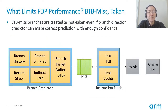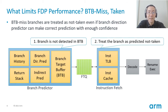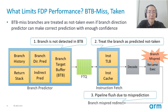The other issue is BTB-miss taken branches. As mentioned, FDP relies on BTB to identify branch location. If a given branch misses BTB, the branch predictor cannot identify branch location nor branch target. Typically, such a branch is treated as not-taken regardless of branch direction predictor output. If the branch is marked as not-taken for an actual taken branch, the branch misprediction will be detected during execution and a pipeline flush due to branch misprediction is initiated. This additional branch misprediction can hurt performance.